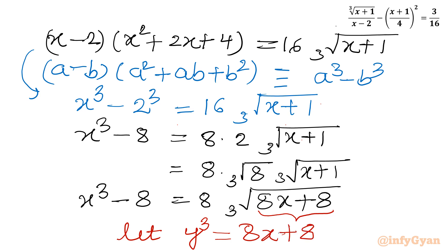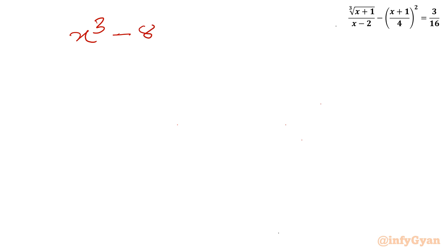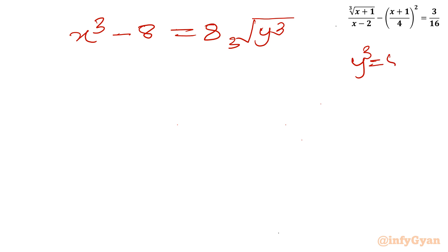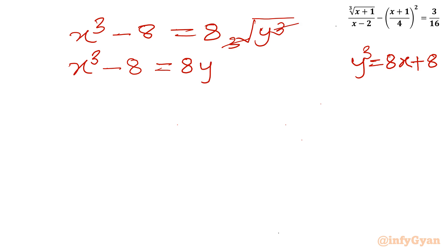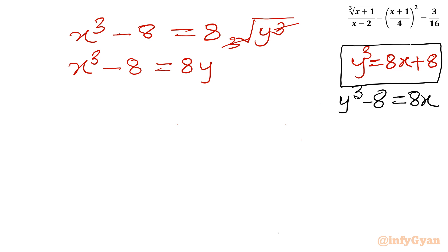With y³ = 8x + 8, the equation x³ - 8 = 8 · cube root(y³) becomes x³ - 8 = 8y. Call this Equation 1. From the substitution y³ = 8x + 8, we get Equation 2: y³ - 8 = 8x.